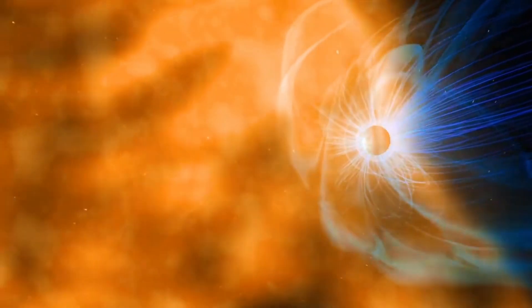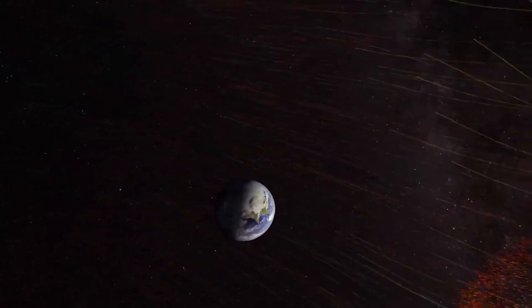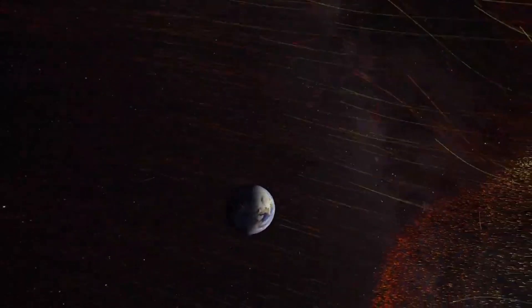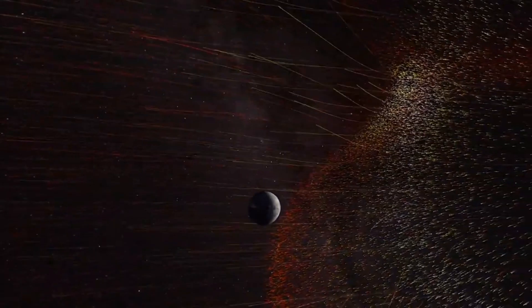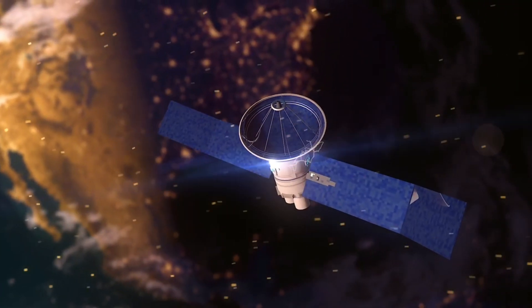Small particles of light called photons carry this energy through the radiant zone to the uppermost layer of the Sun's interior. There, the movement of boiling gases brings energy to the surface.